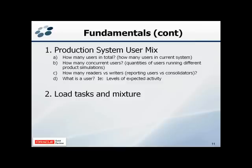Once we determine what types of tests to run, we have to look at the mix of users and tests. It's not good enough to know we want 500 users — it's really 500 users running what tests? We need to know the total concurrency: we may have 2,000 named users, but at any one time do we expect half of that or a quarter? Are these users geographically dispersed so there are never more than 300 on at one time, or during year-end close do we expect all of them in the system?